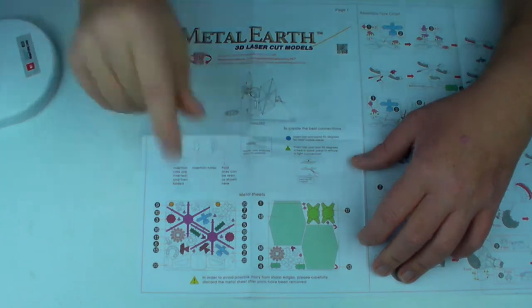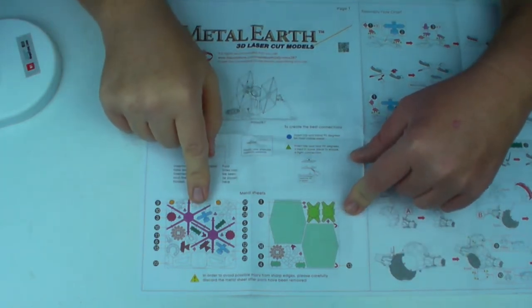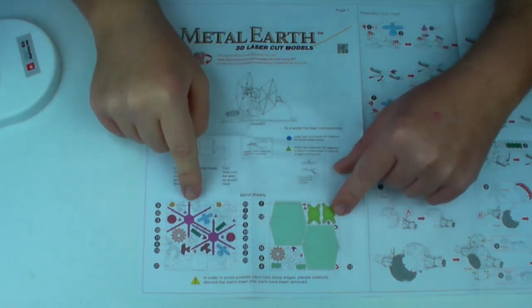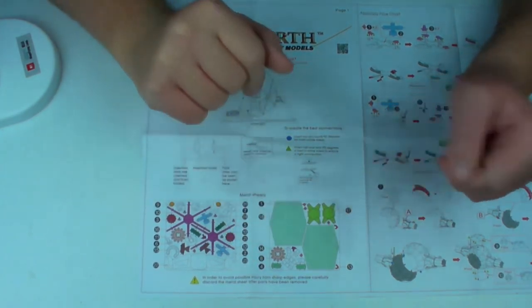Then we have our two sheets which are color coded for matching parts, which is excellent, and we have all the part numbers.